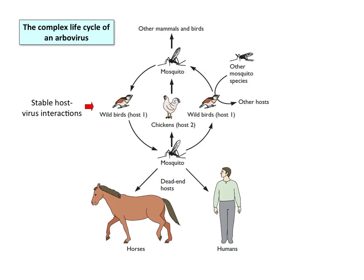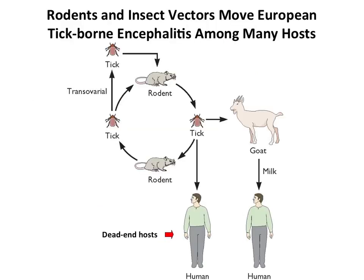Tick-borne encephalitis virus is transmitted by ticks among rodents in a stable rodent-tick cycle. Ticks may also bite other animals as part of the cycle. If you wander into the woods and get bitten by a tick, you may get tick-borne encephalitis — present in certain parts of the U.S. and other parts of the world. You'll get sick with encephalitis, but you will not transmit it to anyone else. Another example of a dead-end interaction.